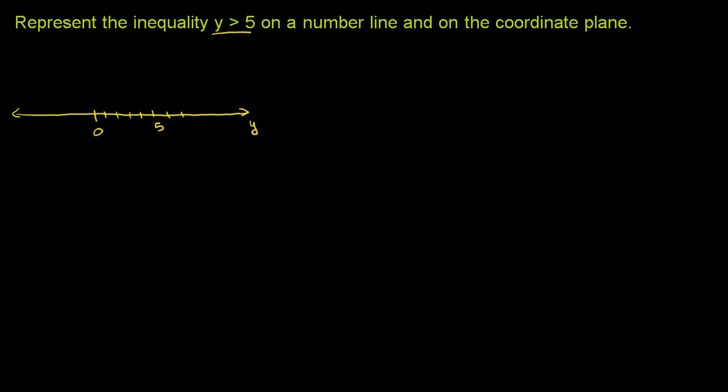So we're not going to be including 5 in the numbers that can be y. So we're not going to include 5, so we're going to do an open circle around 5. And all of the other values greater than 5 will be included.